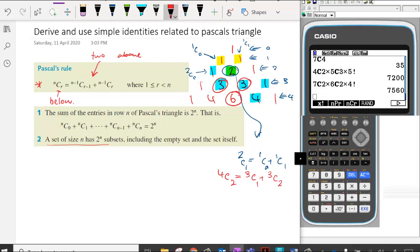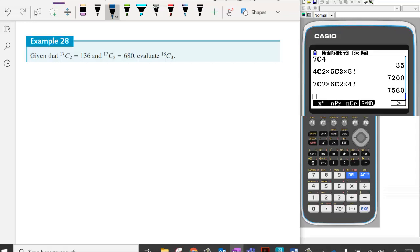So in this first example, it says given that 17C2 is equal to 136 and 17C3 is equal to 680, then we want to value 18C3. Now remember we know that nCr is equal to n-1 choose r-1 and n-1 choose r. So if n is 18 in this case, and r is 3, then what we're saying is we're looking at 17C2 plus 17C3.